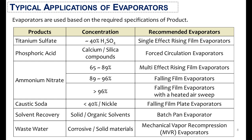For caustic soda having a concentration less than 40% and nickel compounds, falling film plate evaporators are selected. For solvent recovery products containing solid and organic solvents, batch pan evaporators are recommended to avoid flammability risk. For wastewater containing corrosive chemicals or solid materials, mechanical vapor recompression evaporators are widely used in the process industry.